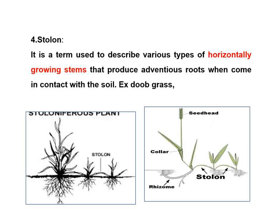Stolon is the term used to describe various types of horizontally growing stems that produce adventitious roots when they come in contact with the soil. For example, dove grass or Bermuda grass (Cynodon dactylon), which grows very vigorously and very fast due to the presence of stolons.